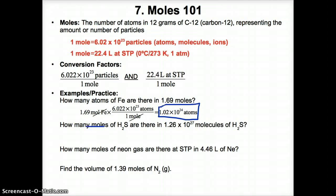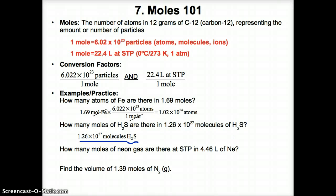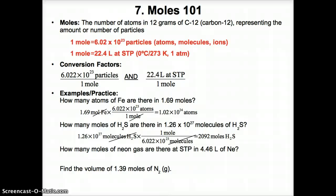How many moles of H₂S are there in 1.26 × 10²⁷ molecules of H₂S? Start with 1.26 × 10²⁷ molecules of H₂S and convert to moles. Molecules are just another way of saying particles. Flip the conversion factor to put molecules in the denominator: multiply by 1 mole over 6.022 × 10²³ molecules. The molecules cancel out, leaving only moles, giving 2,092 moles of H₂S.